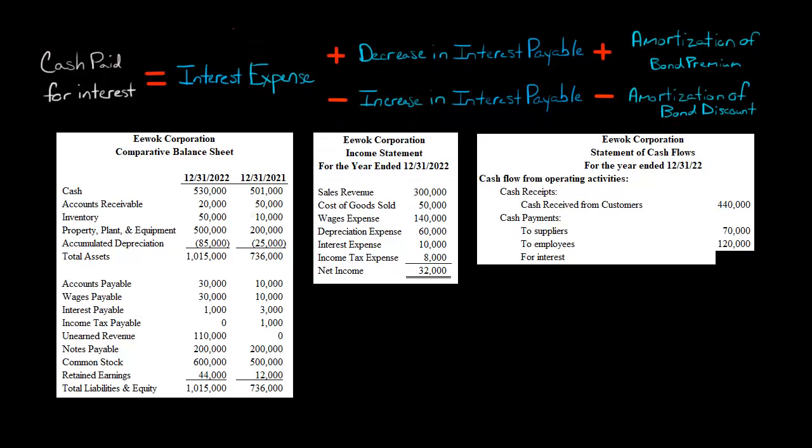Let's say that we've got this company here. We've got comparative balance sheets, we've got an income statement, and we've been putting together in the previous videos a statement of cash flows using the direct method. We've been working on the operating section here. We derived our cash receipts. We had cash received from customers, which came from sales revenue, and then we converted it to cash basis. And we had cash payments to suppliers, to employees, and now for interest.